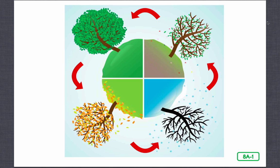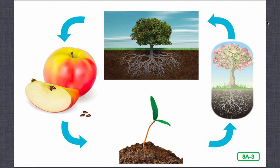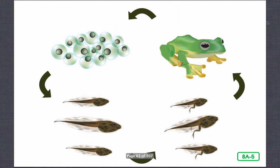You have already learned about five cycles: the seasonal cycle, the life cycle of a flowering plant, the life cycle of a tree, the life cycle of a chicken, and the life cycle of a frog. Today you will learn about the life cycle of a butterfly.